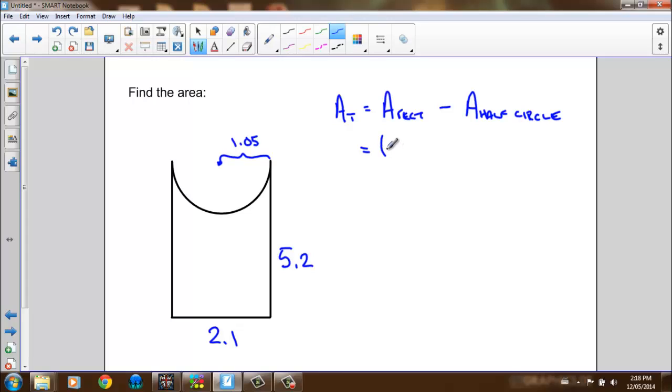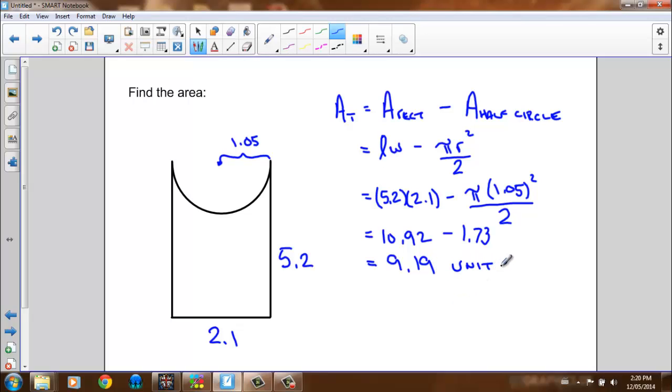So filling in the details, my rectangle would have an area of length times width, subtracting the area of the half circle, which is pi r squared divided by 2. Length is 5.2, width is 2.1, and I'm subtracting pi times 1.05 squared, all divided by 2. And I get 10.92 minus the area of the half circle, which is 1.73 units. 10.92 minus 1.73 is 9.19 units squared.